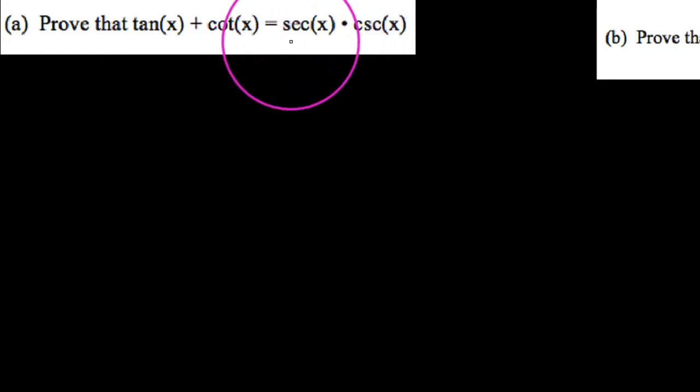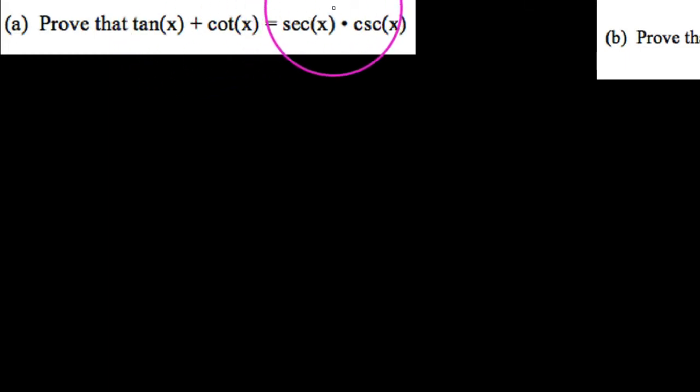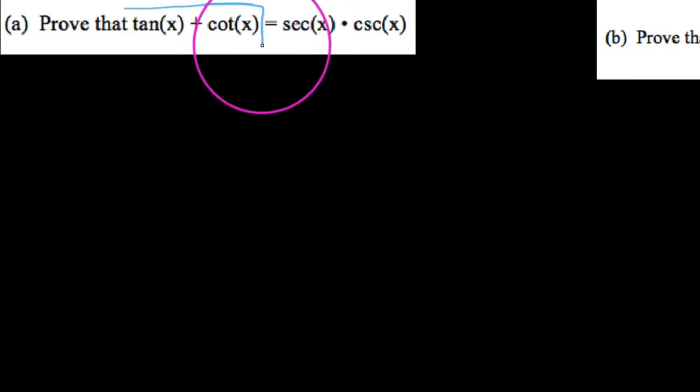One very big reason why I wanted to do this example is because you've got a sum on one side and a product on the other. One of the big quarrels we have is when we work on problems such as these: which side should we work on, the left side or the right side? Well, typically the more complicated side. It's usually easier if you work on the side that has a sum or a difference. So that being said, we're actually going to work with tangent of x plus cotangent of x.